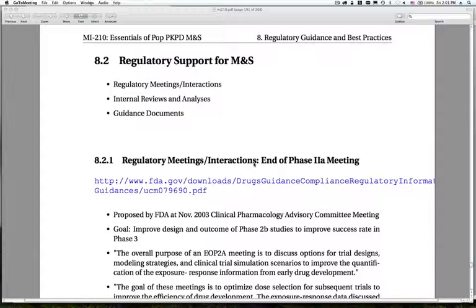As far as regulatory support goes, there are three different ways that regulatory agencies are involved. One of them is through regulatory meetings and interactions to support and foster the use of modeling simulation. The other is through their own internal reviews of submitted analyses as well as conduct of their own analyses. And then, of course, all of this is supported by specific guidance documents that provide points to consider for sponsors submitting analyses.